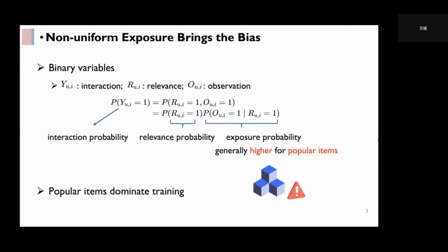An interaction happens only when the user both likes and observes the item. So, the interaction probability equals the joint probability of relevance and observation, which further equals the product of relevance probability and the probability of observation conditioned on relevance. We call the second term the exposure probability.